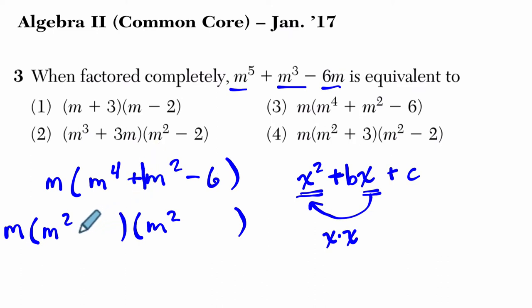And then I'm going to say it needs to multiply negative 6 but add to positive 1. And to do that, I'm going to do plus 3 and minus 2. And then I'm basically done. I don't think I can go any further. That's choice 4.